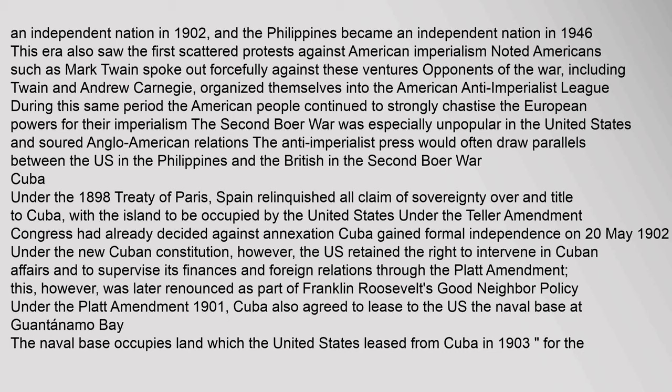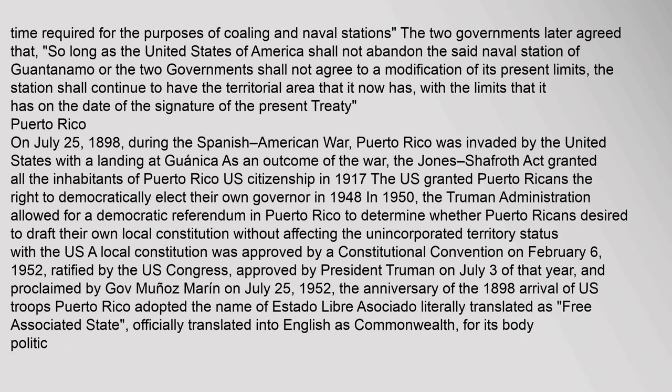Cuba: Under the 1898 Treaty of Paris, Spain relinquished all claim of sovereignty over Cuba, with the island to be occupied by the United States. Under the Teller Amendment, Congress had already decided against annexation. Cuba gained formal independence on 20 May 1902 under the new Cuban Constitution. However, the U.S. retained the right to intervene in Cuban affairs and to supervise its finances and foreign relations through the Platt Amendment, later renounced as part of Franklin Roosevelt's Good Neighbor policy. Under the Platt Amendment, Cuba also agreed to lease to the U.S. the naval base at Guantanamo Bay, which the United States leased from Cuba in 1903.